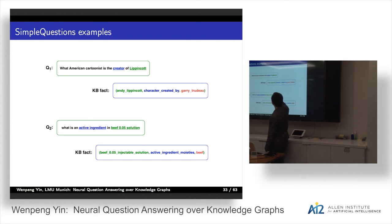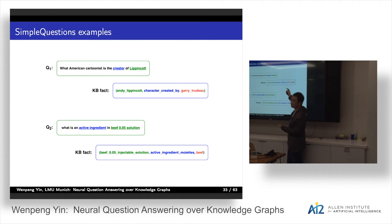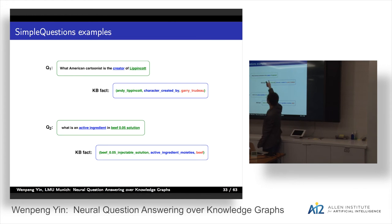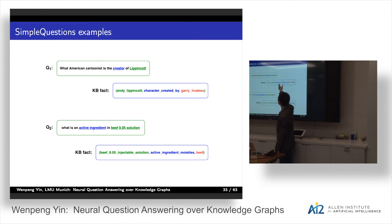The task is: given the question and the knowledge graph, you need to first find a fact from the knowledge graph that matches the question best, then use its tail entity as the answer. The model aligns entities with the question using heuristic matching — how to match the head entity with the topic entity mention, and how to match the relation with the question pattern.